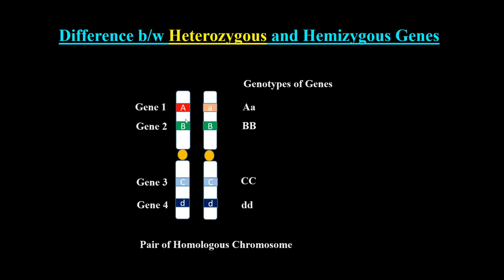There are different versions of genes and each version is called an allele. This is one allele of gene 1 and this is the other allele of gene 1. If these two alleles are different from each other, then gene 1 is called a heterozygous gene. If they are the same, like gene 2, gene 3, and gene 4, then the genes are called homozygous genes.